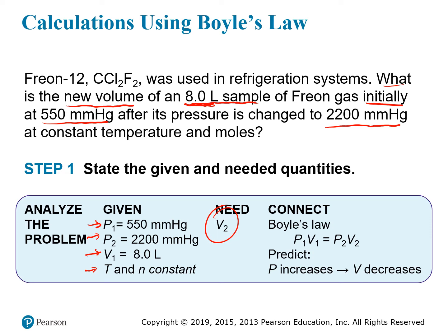Once we see a pressure and volume related to one another, with one variable changing and we want to find how the other is affected, we know we're dealing with Boyle's Law. We can also make a prediction: the pressure is increasing from 550 to 2,200 mmHg, so an increase in pressure leads to a decrease in volume. We should expect an answer that is a smaller volume than 8 liters.